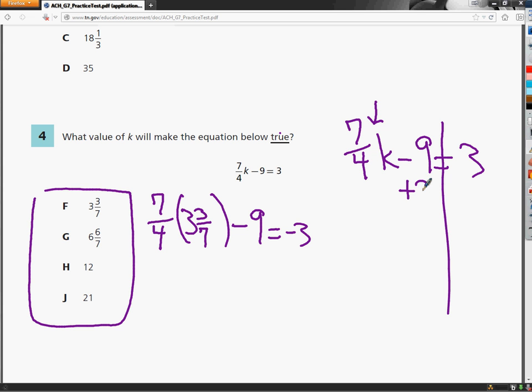To get rid of minus 9, I need to add 9. That cancels. On the right side, 3 plus 9 is 12. Then I need to bring down 7 fourths k. From here, the idea is that the 7 fourths and the k are touching each other. The k is not part of the fraction, so this is not a divide situation.